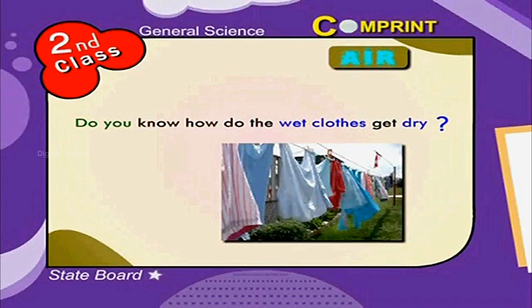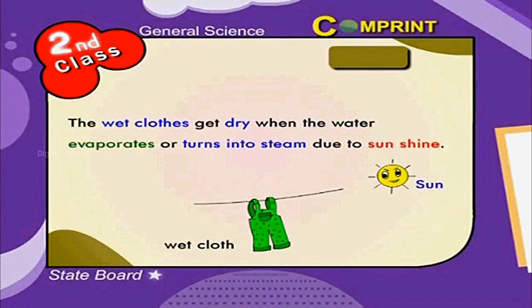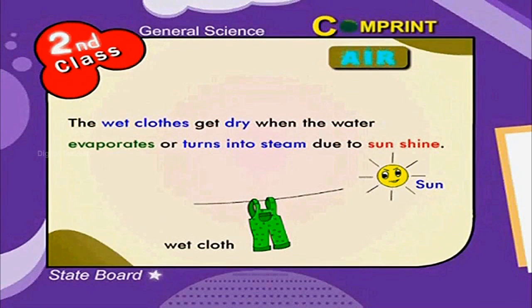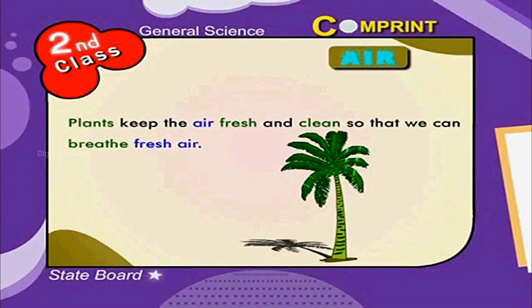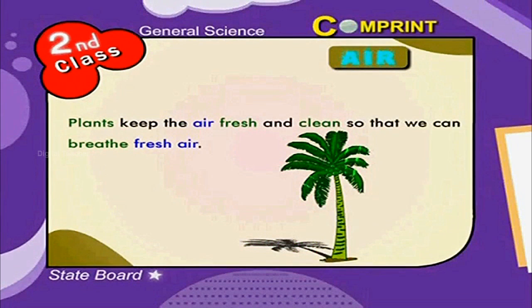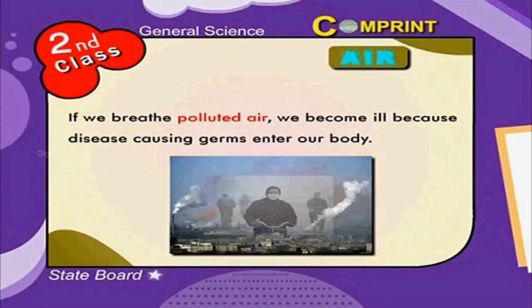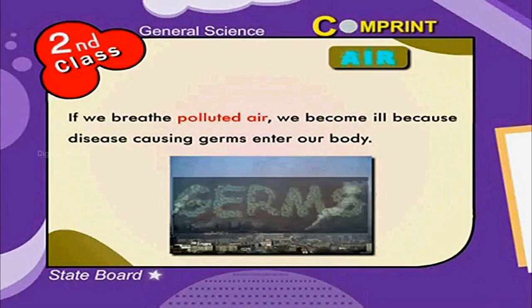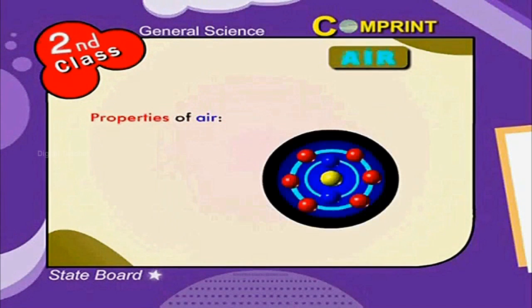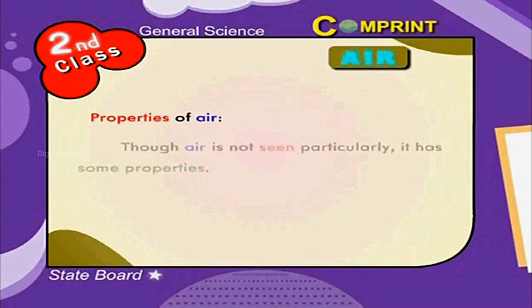Do you know how wet clothes get dry? The wet clothes get dry when the water evaporates, or turns into steam, due to sunshine. Plants keep the air fresh and clean so that we can breathe fresh air. If we breathe polluted air, we become ill because disease-causing germs enter our body.